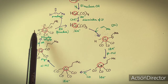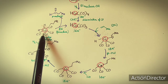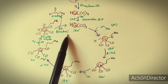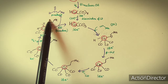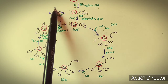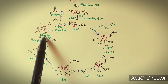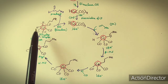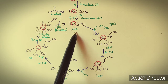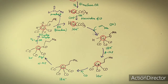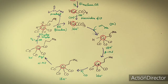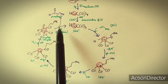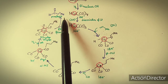Oxidative addition of H₂ gives a dihydride complex where the two hydrides are in cis positions, and the system becomes an 18-electron species. After oxidative addition, reductive elimination takes place — a binuclear reductive elimination — where H and the acyl group eliminate to form the aldehyde product H-CHO, and the active catalyst HCo(CO)₃ is regenerated.